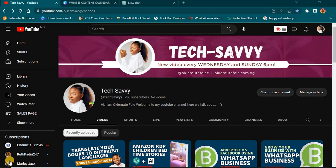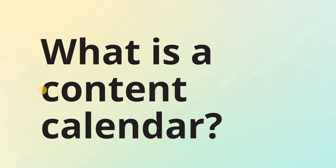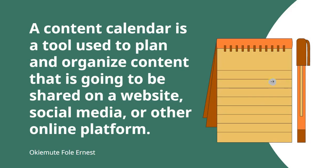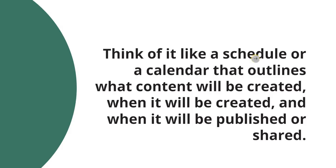So here on my screen I'm asking: what is a content calendar? A content calendar is a tool used to plan and organize your content that is going to be shared on your website, social media, or other online platforms. It's more of a guideline — it tells you what to post today, what to share tomorrow, what to share next week. Think of it like a schedule or a calendar.